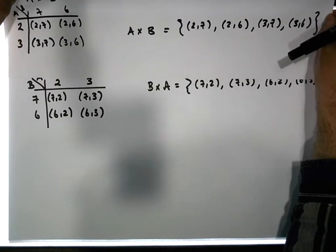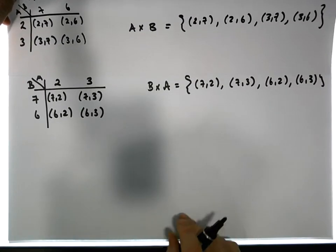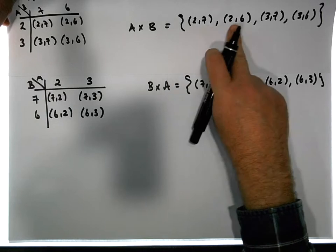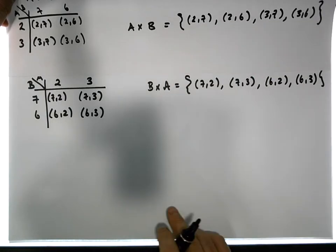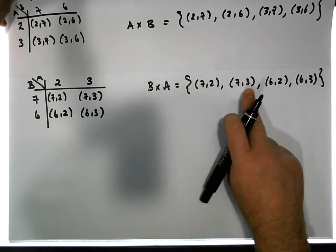When we look at the cross product of A with B, we have the ordered pairs 2,7, 2,6, 3,7, 3,6. They're different to these particular pairs here. They're not the same.